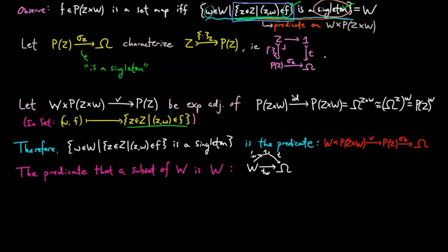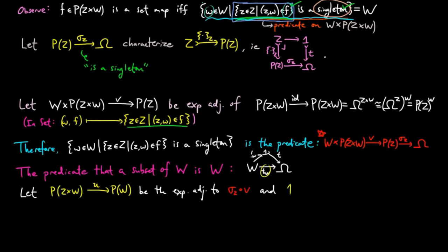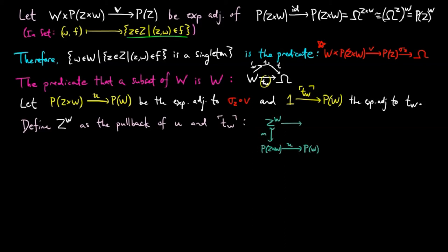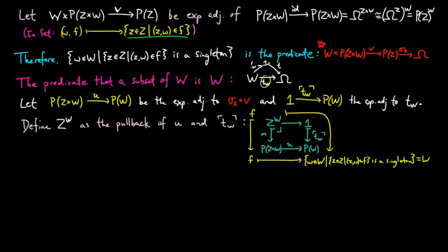Since the exponential object z to the w should be a sub-object of the power object of z cross w, we transform the condition to give a sub-object of P(z cross w). We let u be the exponential adjoint of sigma sub z composed with v, and the naming of t sub w be the exponential adjoint of t sub w. We then define the object z to the w in an arbitrary topos as the pullback of u and the naming of t sub w. In the category of sets, f is in this pullback precisely when it satisfies the condition defining f as a map from w to z, so this is a proper generalization of the exponential object construction.